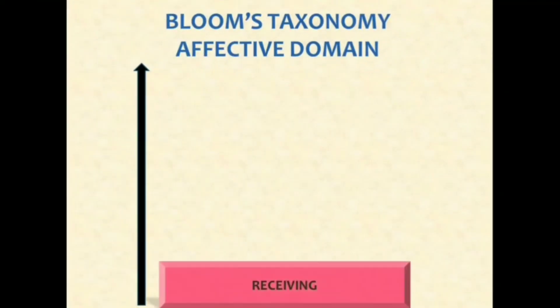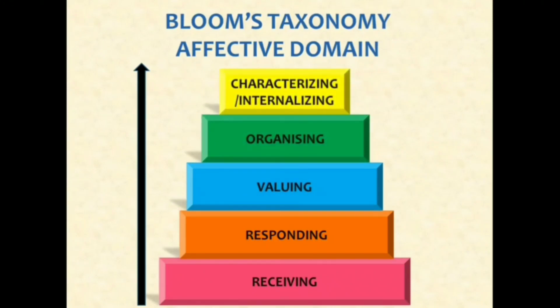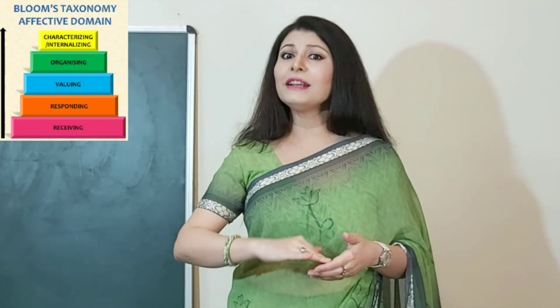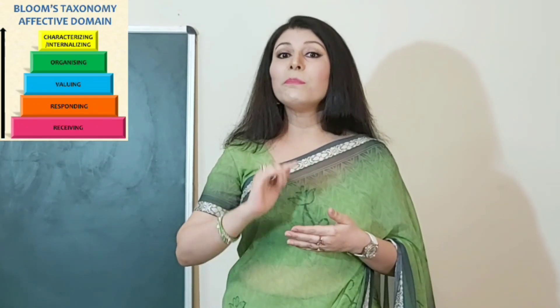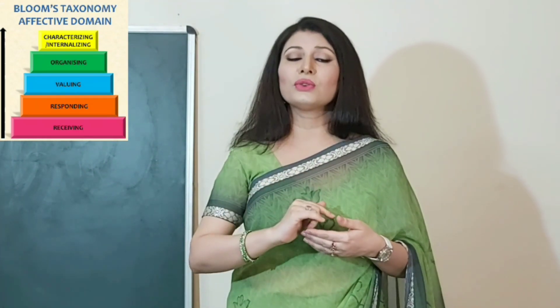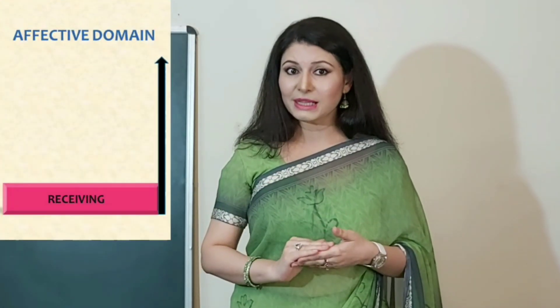Like the cognitive domain, the affective domain also has levels of learning. There are five levels in the affective domain: receiving or attention, responding, valuing, organizing, and characterizing — which is also called internalizing or generalizing. Like the cognitive domain, these are arranged in a hierarchy from the lowest order process to the highest, from simpler feelings to more complex ones, and each level builds upon the lower level.